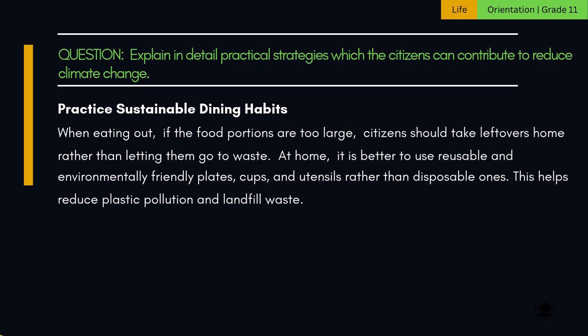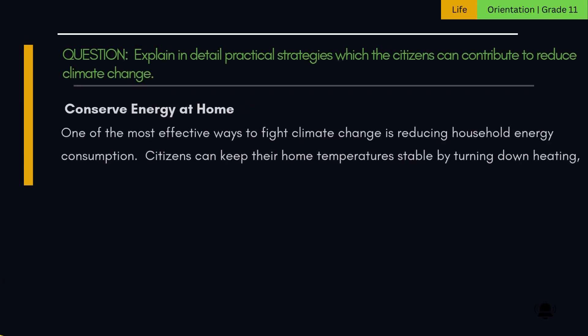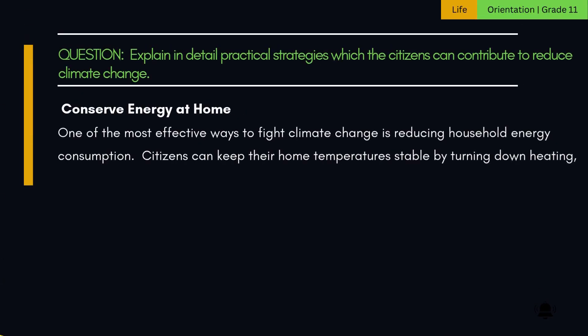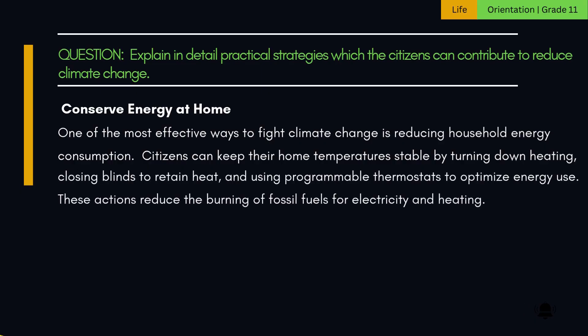9. Conserve energy at home. One of the most effective ways to fight climate change is reducing household energy consumption. Citizens can keep their home temperatures stable by turning down heating, closing blinds to retain heat, and using programmable thermostats to optimize energy use. These actions reduce the burning of fossil fuels for electricity and heating.